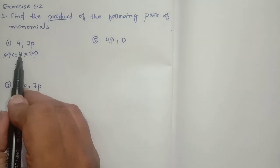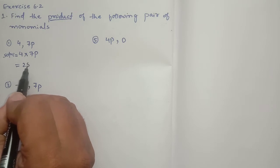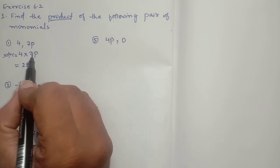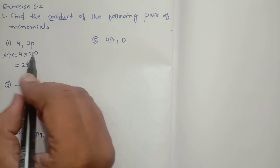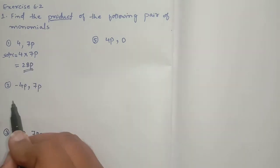First we have to multiply the numbers. 4 sevens are 28. Then we have to multiply the variables. We have only one variable so it will be as it is. Answer is 28p.